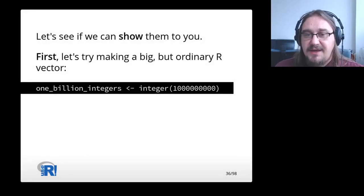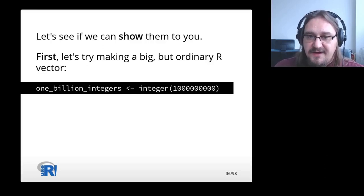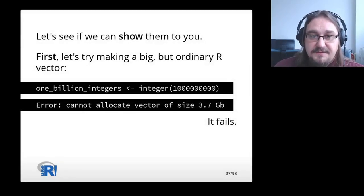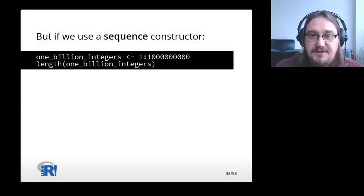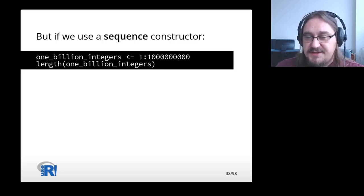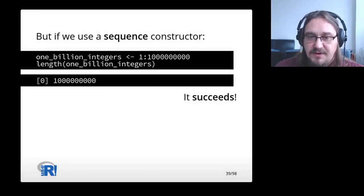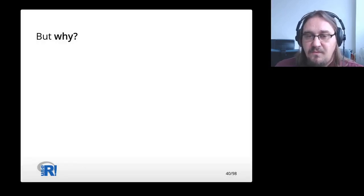First, let's try making a big but ordinary R vector. Let's call it 1 billion integers and try to fit that many integers into it. It fails. But if we use a sequence constructor, 1 billion integers is a sequence from 1 to 1 billion. This works, and if we check its length, it is indeed 1 billion elements inside.